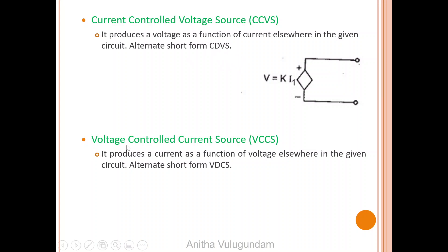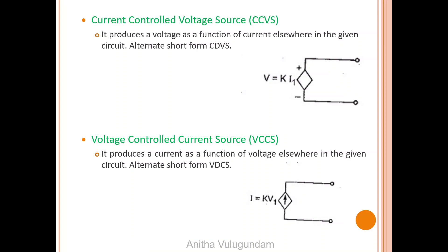Fourth one: voltage controlled current source. It produces a current as a function of voltage elsewhere in the given circuit. Alternate short form is VDCS — that is voltage dependent current source.